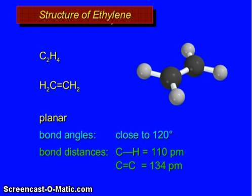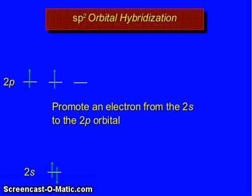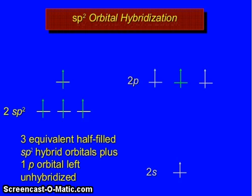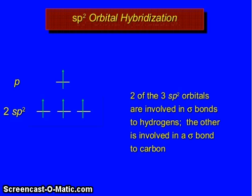sp² hybridization and bonding in ethylene. sp² orbital hybridization: 2s has 2 electrons, 2p has 2 electrons. Promote an electron from the 2s to 2p orbitals. Mixed together, hybridize the 2s orbital and 2 of the 3 p orbitals. This gives 3 equivalent half-filled sp² hybrid orbitals plus 1 p orbital left unhybridized. Two of the 3 sp² orbitals are involved in sigma bonds to hydrogen; the other is involved in a sigma bond to carbon.